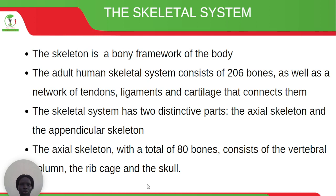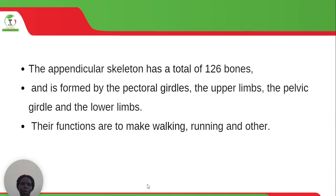The skeleton is the bony framework of the body. The adult human skeletal system consists of 206 bones, as well as a network of tendons, ligaments and cartilage that connects them. The skeletal system has two distinctive parts: the axial skeleton and the appendicular skeleton. The axial skeleton has a total of 80 bones and consists of the vertebral column, the ribcage and the skull, whereas the appendicular skeleton has a total of 126 bones and is formed by the pectoral girdles, the upper limbs, the pelvic girdle and the lower limbs.